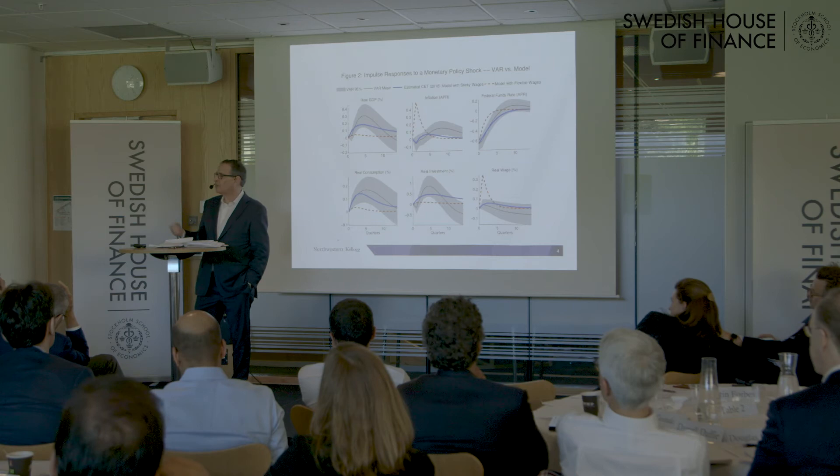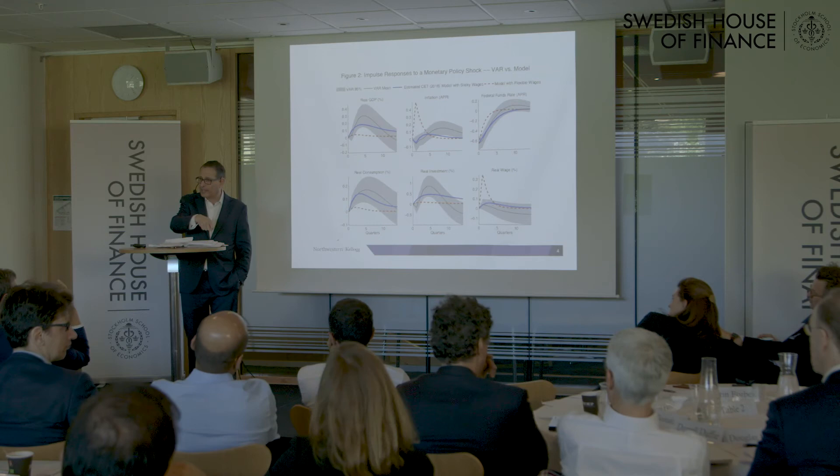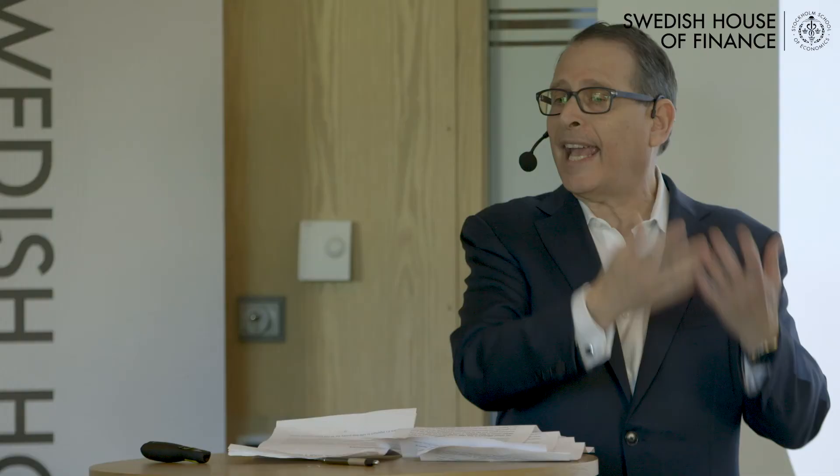Larry estimated that model using full information maximum likelihood with a large number of financial variables. When you put in those financial variables, you drive out most of the other shocks that people thought were important. For example, if you thought shocks to the marginal efficiency of investment were really important, those are like increases in the supply of capital that drive down the price of capital goods — which tells you the stock market is counter-cyclical. The likelihood function hates that. Instead, what you get is the risk shock, at least for the pre-crisis period, as crucial.